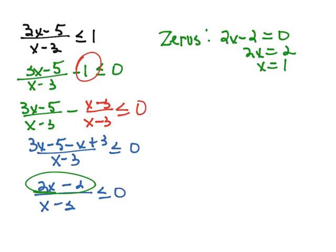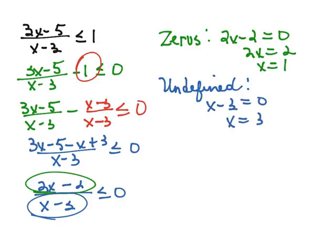And then we want to find the undefined places. And the undefined values are going to be places where the denominator is equal to 0. And so that would be at x equals 3. So we're going to draw a number line and on our number line we're going to put our undefined places and our zeros. And so we'll divide our function up into 3 test intervals.